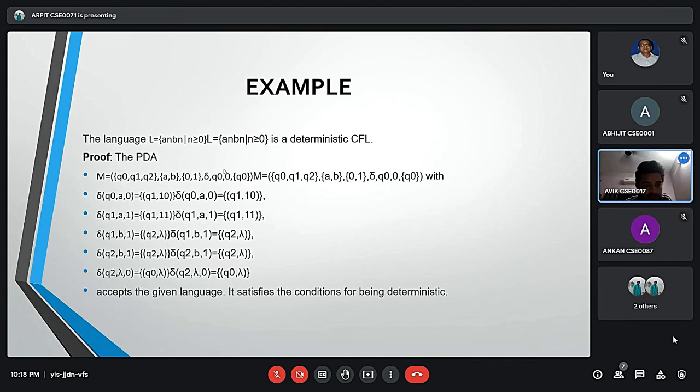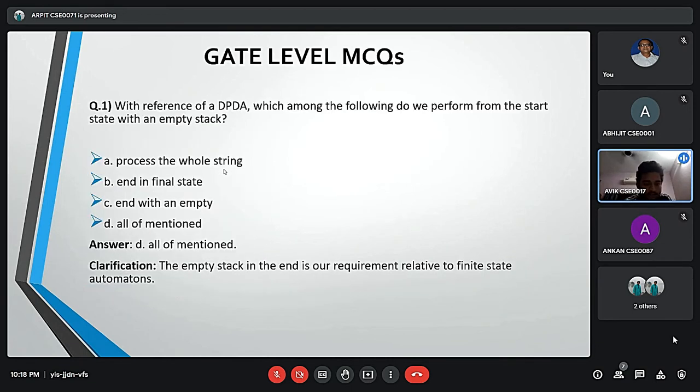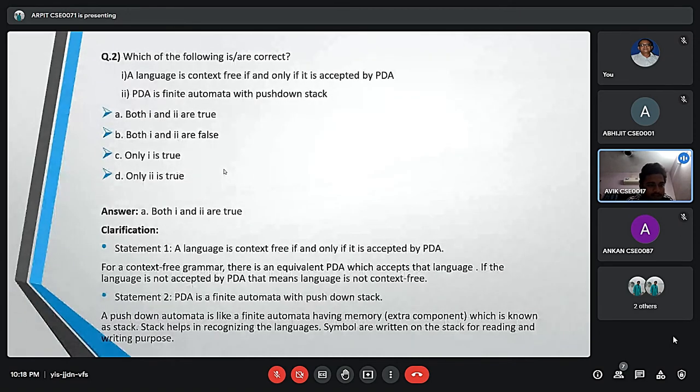Here are some gate level MCQ questions. Number one: With reference to a pushdown automata, a deterministic pushdown automata, which among the following do we perform from the state's start set with an empty stack? The answer is: process the whole string, end in the final state, and end with an empty stack. The expression is that the empty stack in the end is the requirement relative to finite state automata.